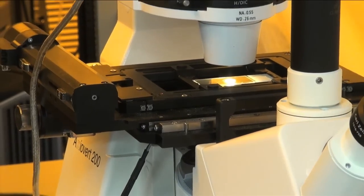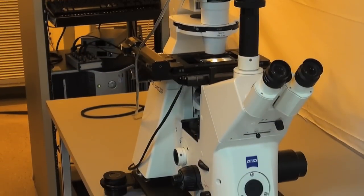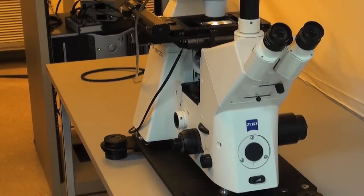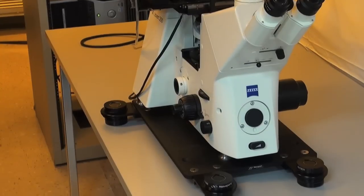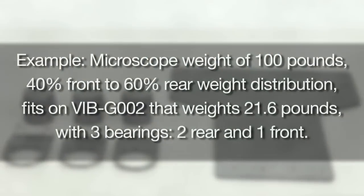For microscope applications, it is important to understand the weight distribution in the front and rear to make the proper bearing selection. Consider a microscope that weighs 100 pounds, with a weight distribution of 40% in the front and 60% in the rear, and best fits onto a VIVE-G002 that weighs 21.6 pounds.